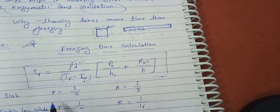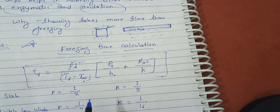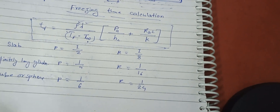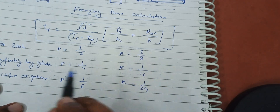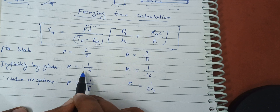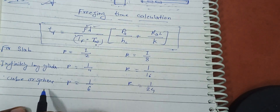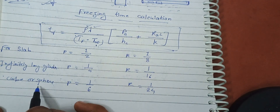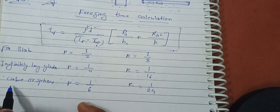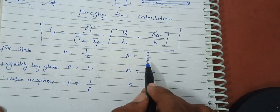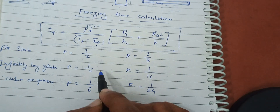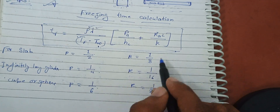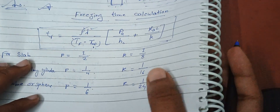The constants P and R depend on the product shape. For a slab: P = 1/2 and R = 1/8. For an infinitely long cylinder: P = 1/4 and R = 1/16. For a cube or sphere: P = 1/6 and R = 1/24. To remember these, note that P values are multiples of 1/2 and R values are multiples of 1/8, in sequence for slab, cylinder, and cube/sphere.